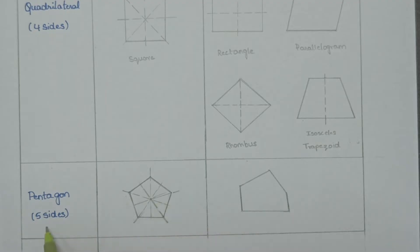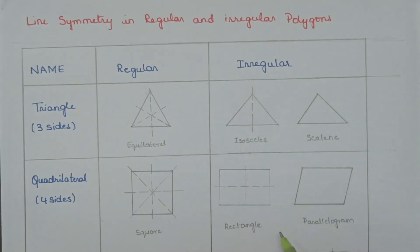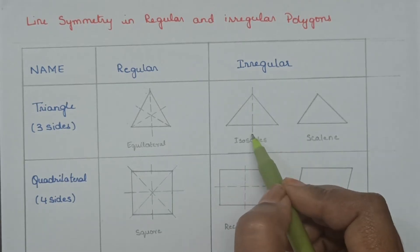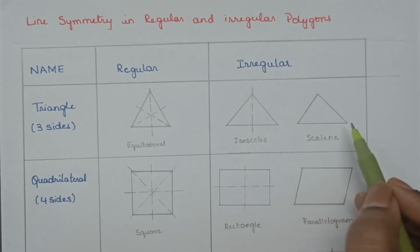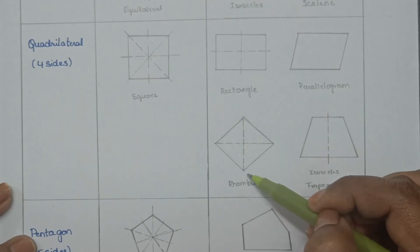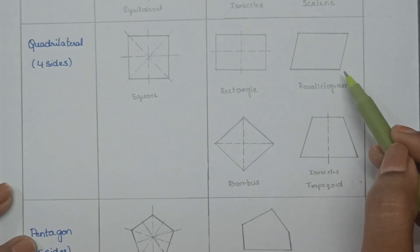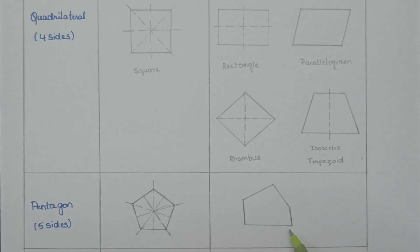Regular pentagon has 5 sides, so the number of lines of symmetry is equal to 5. Irregular polygons may or may not exhibit symmetry. Isosceles triangle has one line of symmetry. Scalene triangle has no line of symmetry. Rectangle and rhombus have two lines of symmetry. Parallelogram has no line of symmetry. Isosceles trapezoid has one line of symmetry. Irregular pentagon has no lines of symmetry.